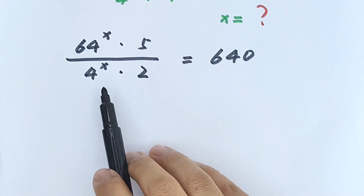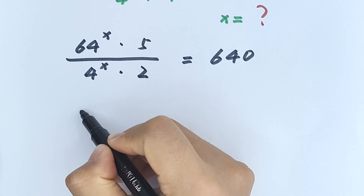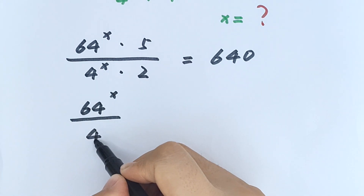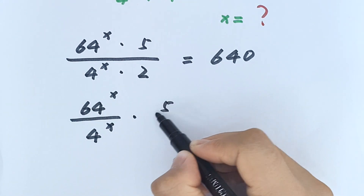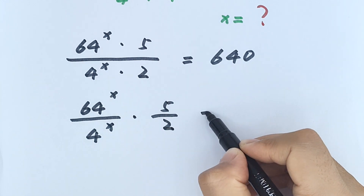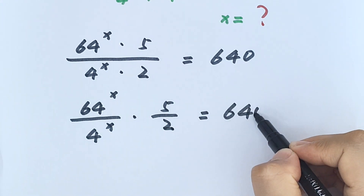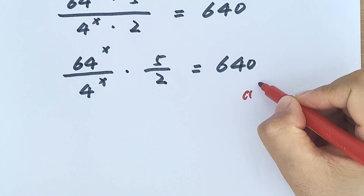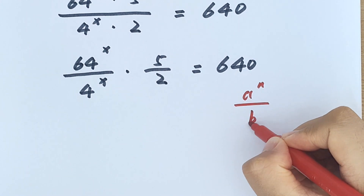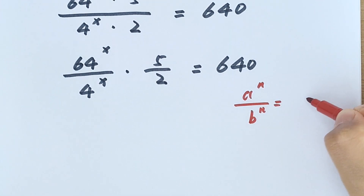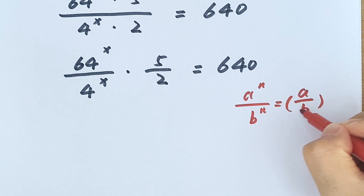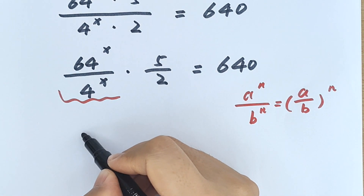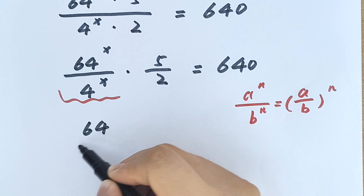The left side simplifies to 64 to the power of x divided by 4 to the power of x, times 5 over 2, equals 640. We apply the formula: a to the power of n divided by b to the power of n equals (a over b) to the power of n. So this part becomes (64 divided by 4) to the power of x, equals 640 times 2 over 5.